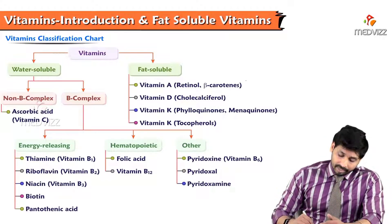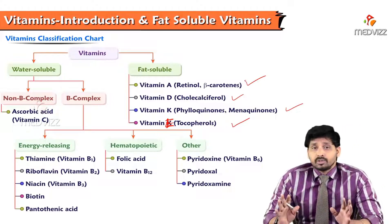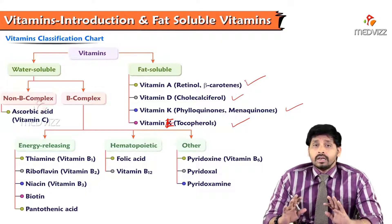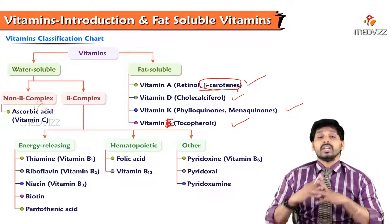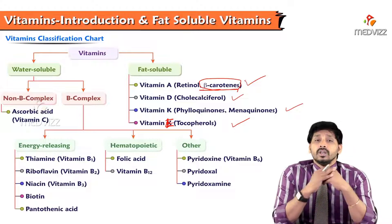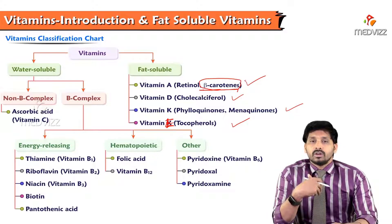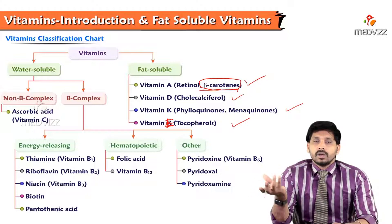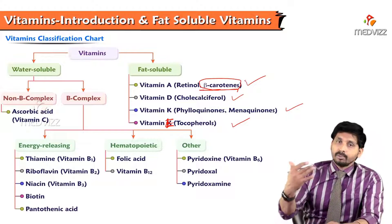Fat-soluble vitamins are sub-classified into four types: vitamin A, vitamin D, vitamin K, and vitamin E. Vitamin A is otherwise known as retinol, and has three forms: retinol, retinoic acid, and beta-carotene. Beta-carotene is the pro-vitamin form — meaning the inactive precursor form — of vitamin A. It is present in plant sources, and once consumed, beta-carotene is converted into vitamin A in our body.